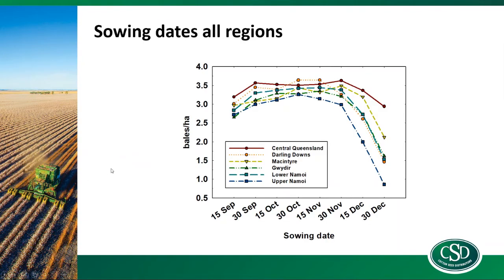The model also allows us to change the sowing dates. Looking at early — mid-September — there's plenty of variability in what the model is producing. This is at a metre-and-a-half row spacing with soil water holding capacity brought back to 200 mm for all sites. Plenty of variability at the start of the window; however, we've got about two months of acceptable sowing with pretty good results through the middle of that planting window before things start to deteriorate and throw up more variability as we get into December.